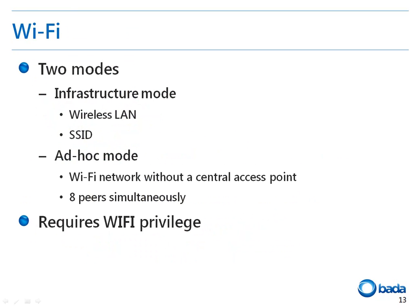Now I'll introduce the Wi-Fi feature. The Wi-Fi APIs are in the Wi-Fi privilege group. In Bada, Wi-Fi basically runs in two modes. The first mode is the Infrastructure mode, which is the preparation step to use a wireless LAN. In this mode, the phone is connected to an AP that has a specific SSID. The second mode is the ad hoc mode. Ad hoc mode enables a Wi-Fi network without an AP. This function makes a peer-to-peer connection between Wi-Fi devices. Bada supports connections with up to eight peers at a time.